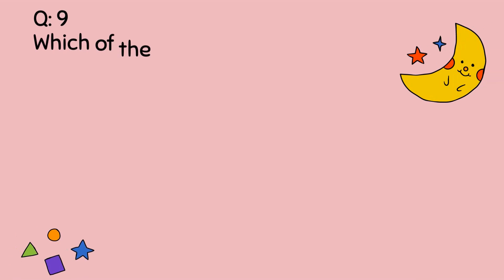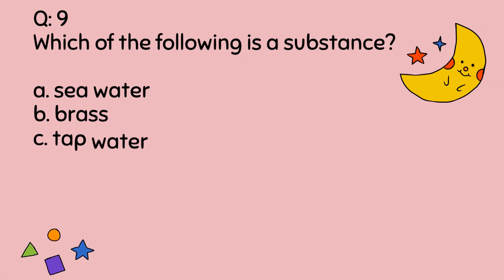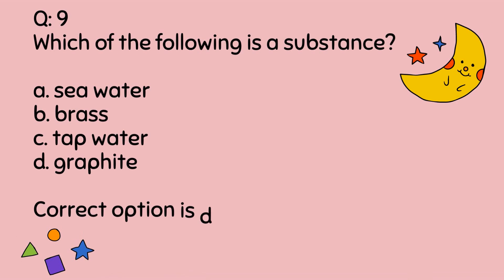Question number 9. Which of the following is a substance? A. Sea water. B. Brass. C. Tap water. D. Graphite. Correct option is D.